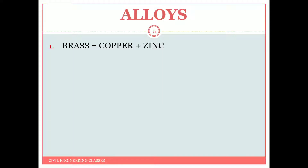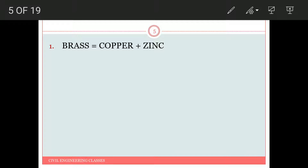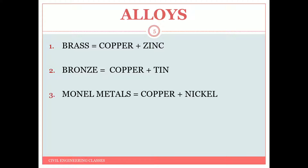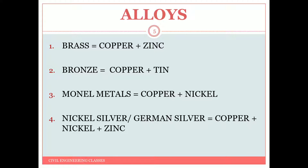Now let's see the different alloys of non-ferrous metals. First is brass, which is an alloy of copper and zinc. Next is bronze, which is an alloy of copper and tin. Monel metal is an alloy of nickel with copper. Nickel silver, also called German silver, is an alloy of copper with nickel and zinc.